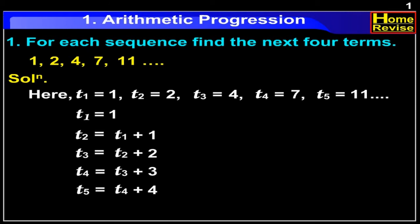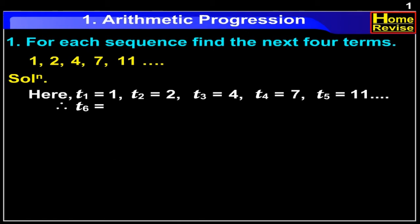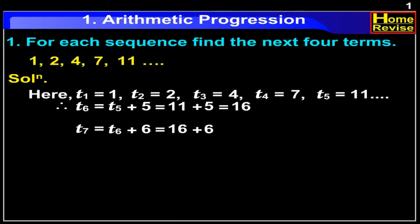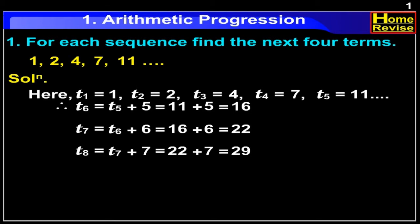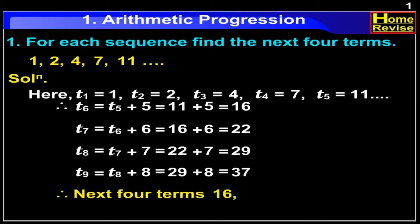Using this relation, let us find the next 4 terms. Therefore, T6 is equal to T5 plus 5, which is equal to 11 plus 5, which is equal to 16. Similarly, T7 is equal to T6 plus 6, which is equal to 16 plus 6, which is equal to 22. T8 is equal to T7 plus 7, which is equal to 22 plus 7, which is equal to 29. And T9 is equal to T8 plus 8, which is equal to 29 plus 8, which is equal to 37. Therefore, the next 4 terms are 16, 22, 29 and 37.